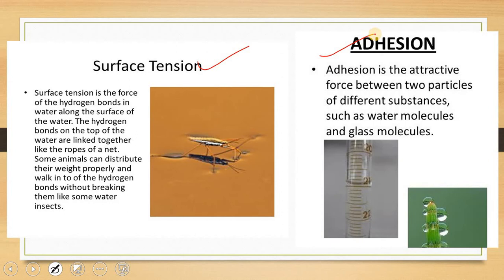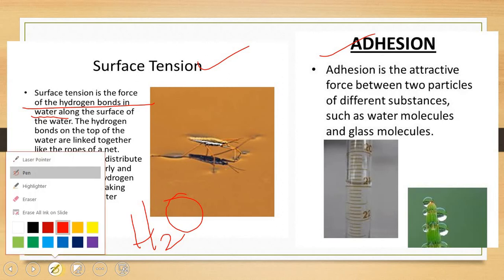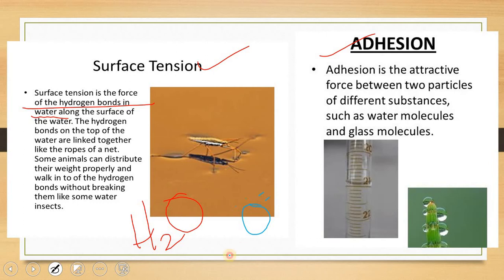The first characteristic is surface tension, which is the force of the hydrogen bond in water. The hydrogen bonds on the top of the water are linked together like the ropes of a net. Some animals can distribute their weight properly and walk on top of the hydrogen bonds without breaking them. Inside the water we have H₂O, and the bond between the molecules involves hydrogen and oxygen.